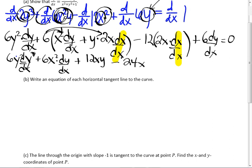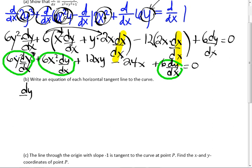24x dx dx, which is 1. That's what you missed. You had this one. Plus 6 dy dx equals 0. Now, unfortunately, on the exam you can't do this, but I'm going to do it. I want all the dy dx's on one side and everything else on the other.